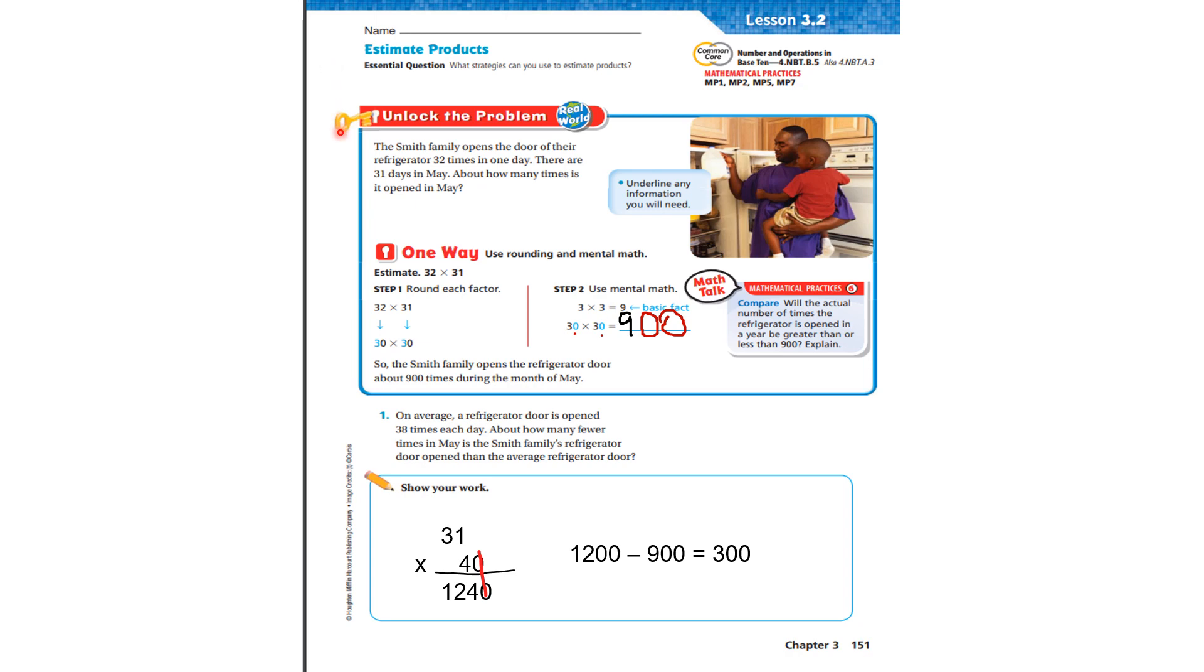Unlock the problem. The Smith family opens the door of their refrigerator 32 times in one day. There are 31 days in May. About how many times is it opened in May? Well, let's underline the information that's important. We know it's opened 32 times in a day. There are 31 days in May. And how many times is it opened in May?